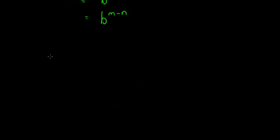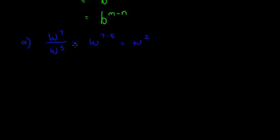Let's do a few examples. Let's say we have W to the power of 7 divided by W to the power of 5. This becomes W to the power of 7 minus 5, which is W to the power of 2. You can imagine if I had 7 W's and 5 W's, I would cancel 5 on top with 5 on the bottom and I would have 2 left on top.